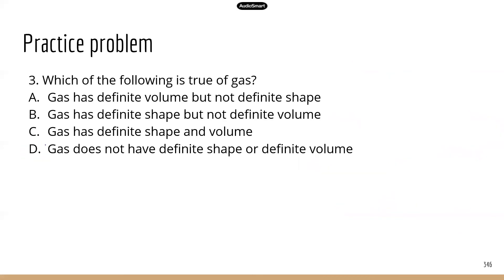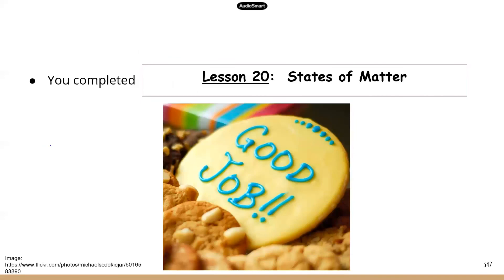Number three: which of the following is true of gas? Gas is the least orderly — molecules are really spread out in space. Gas does not have a definite shape or a definite volume. So the correct answer is D: no definite shape, no definite volume. All right, we're done with this lesson. Good job, guys.